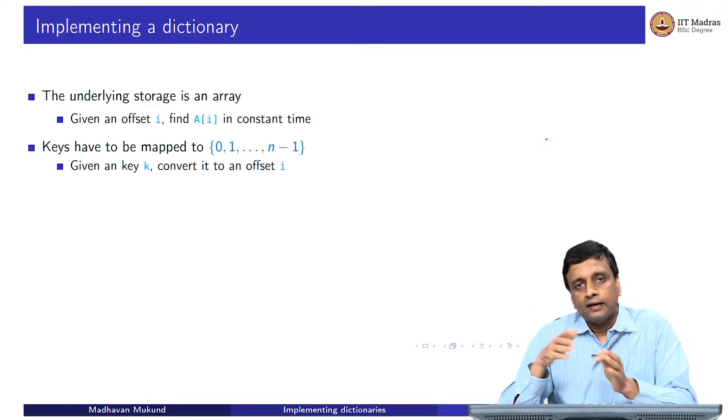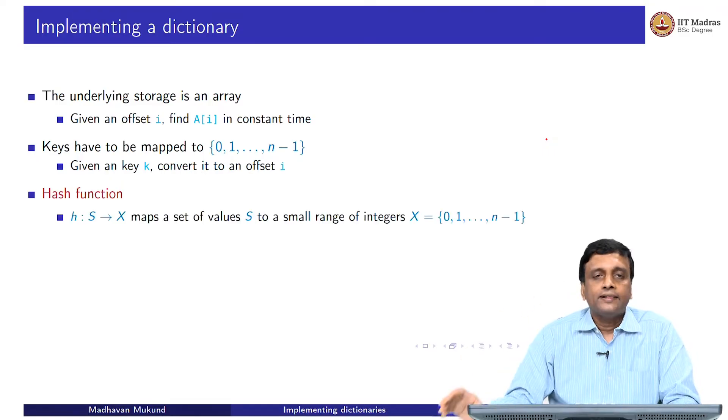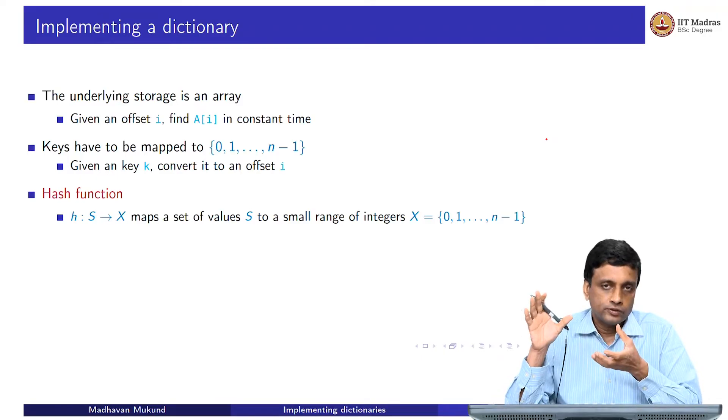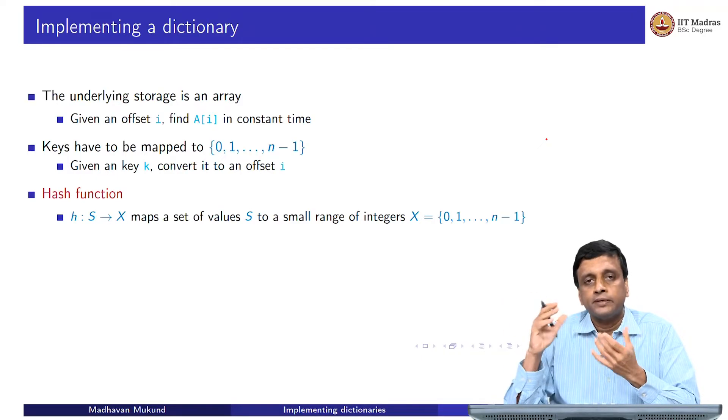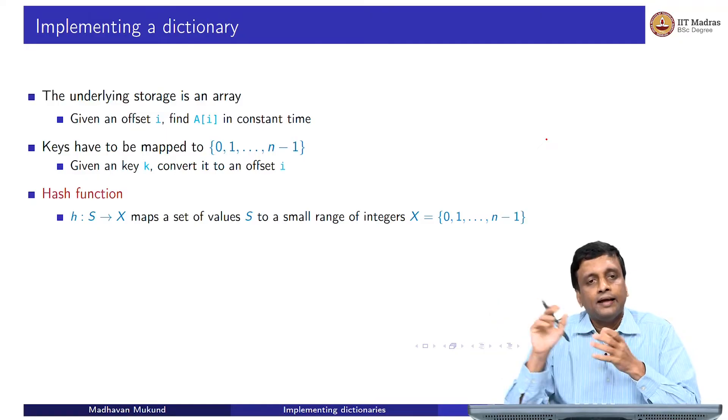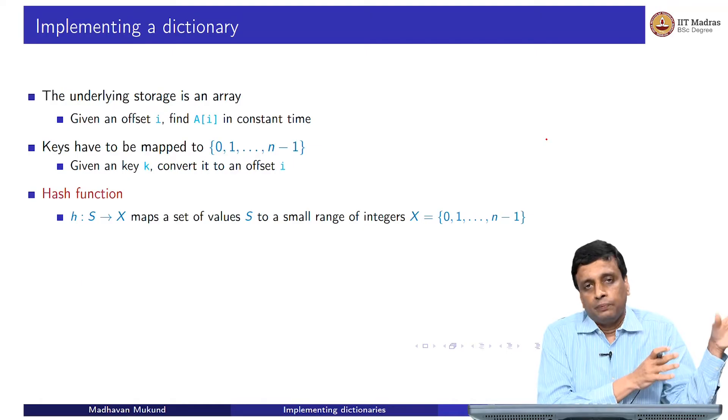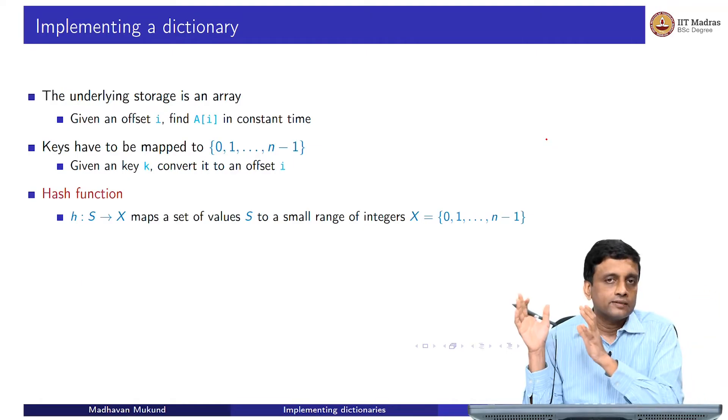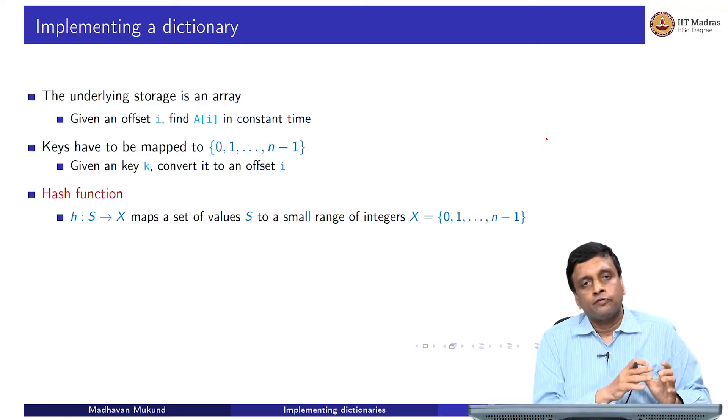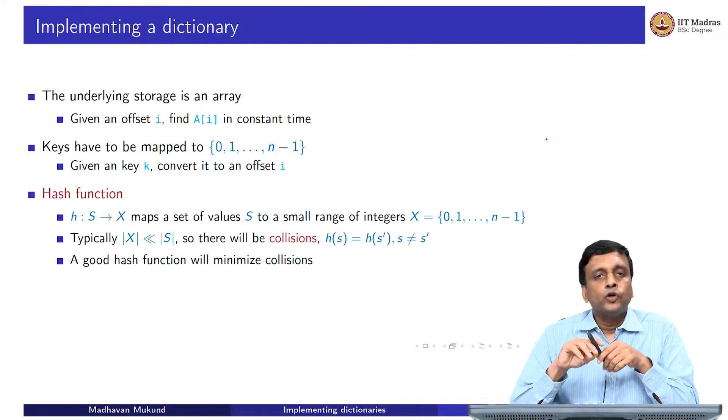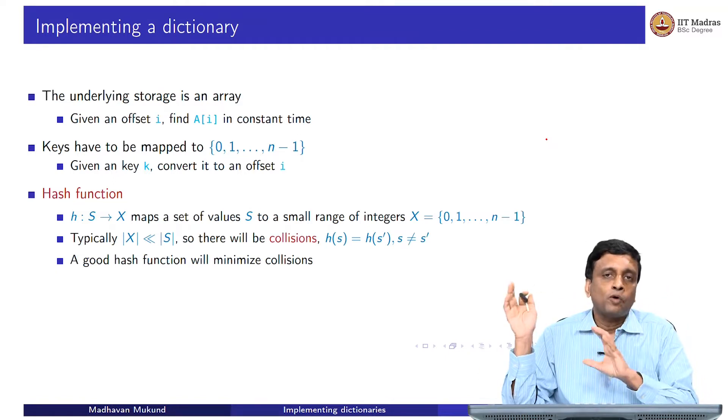We need a function which can map keys to 0 to n-1. We want to given a key k converted to an offset i. And this kind of a function is called a hash function. It takes a set of values - the set of values could be roll numbers, names, any set, and maps these values to a fixed range, typically 0 to n-1. It takes an arbitrary set and maps it to a small range of values.